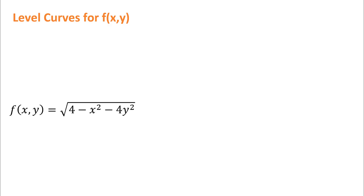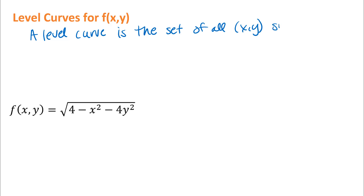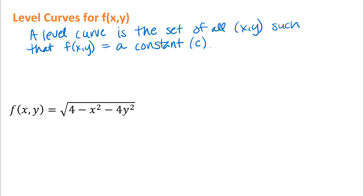In this video we're going to look at graphing level curves for a function of two variables. First of all, we want to be sure we're clear what a level curve is. For a function of x and y, a level curve is the set of all x, y such that the function output f(x, y) is equal to a constant, often we use c. So we're interested in specific c values and the set of all x, y that give us those specific c values.